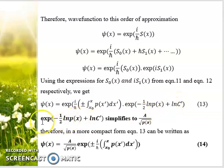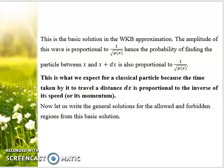If we carefully solve the second term, this simplifies to A/√p(x) by assuming the bracket term equals log A and arranging the terms in log product form. Using this back into equation 13, we get the expression for ψ(x) in this form. This is basically the basic solution of WKB approximation.